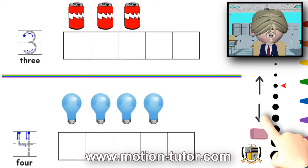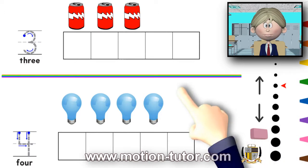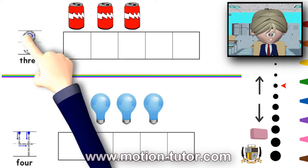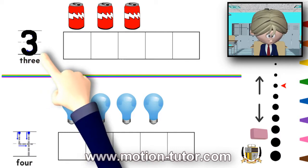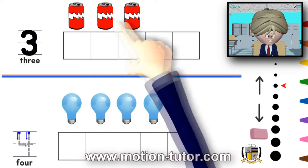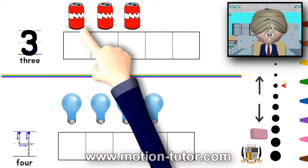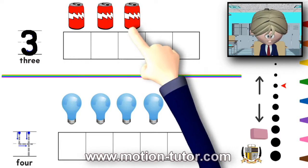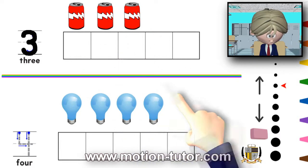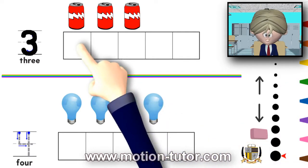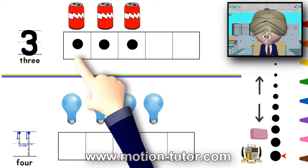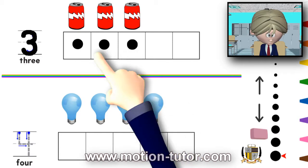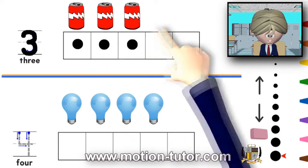So, let's take a look at three and four, this time using the five frame. Let me write the three again — that's how you write three. We have three soda cans: one, two, three. And I will put three counters in, one in each space in this five frame — a counter here, here, and here. One, two, three. Three counters were placed within this five frame.